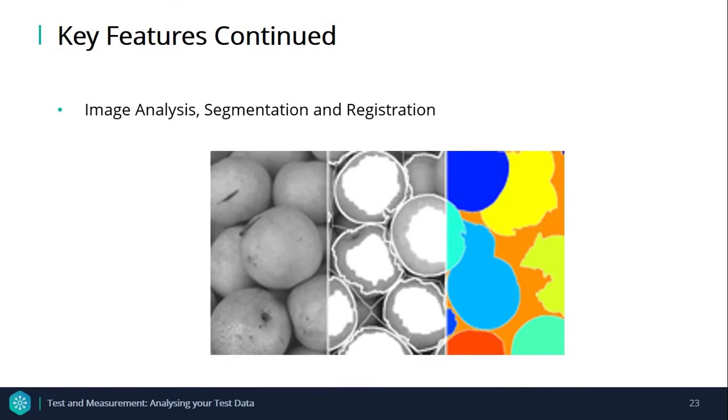Intensity-based image registration is supported by the Image Processing Toolbox, which automatically aligns images using relative intensity patterns. Please also keep in mind that there is also the Computer Vision System Toolbox that is great to have and used when coupled with the Image Processing Toolbox.